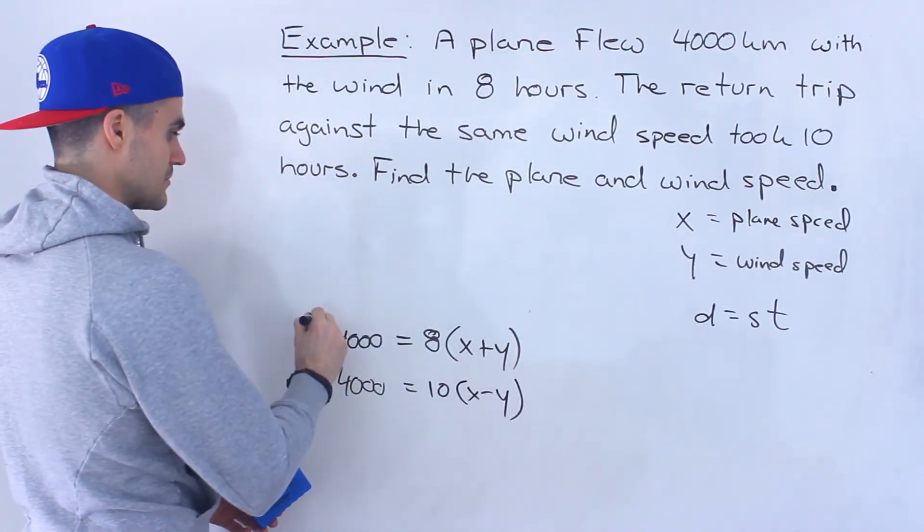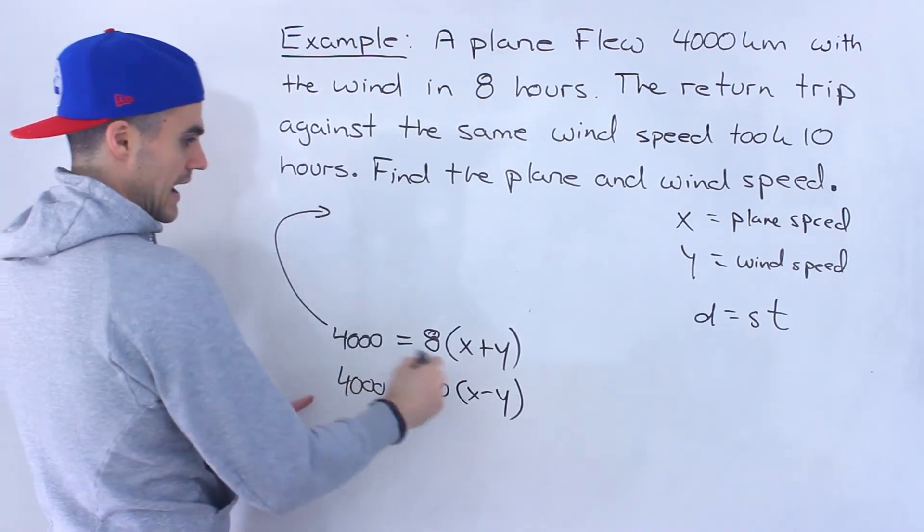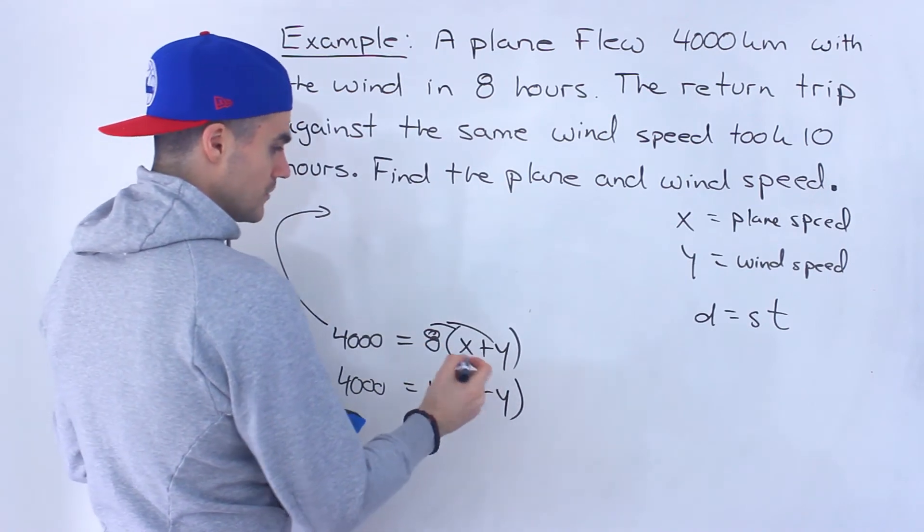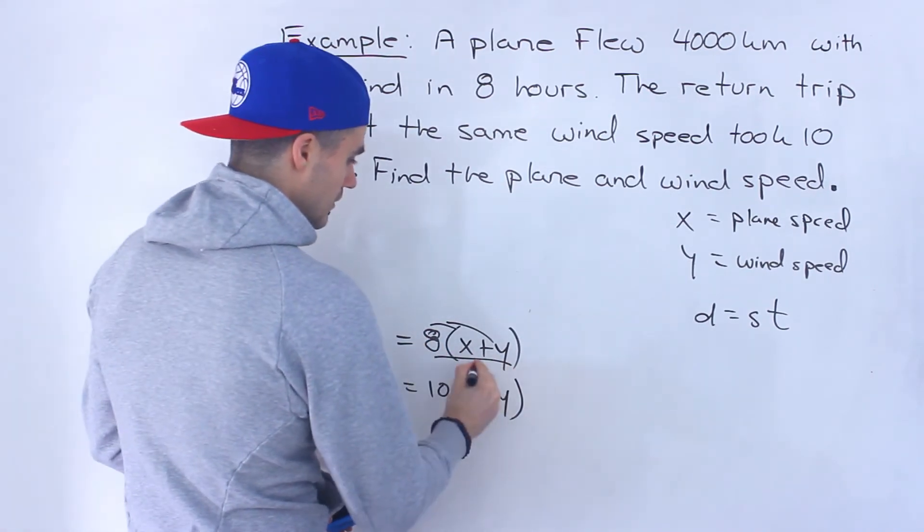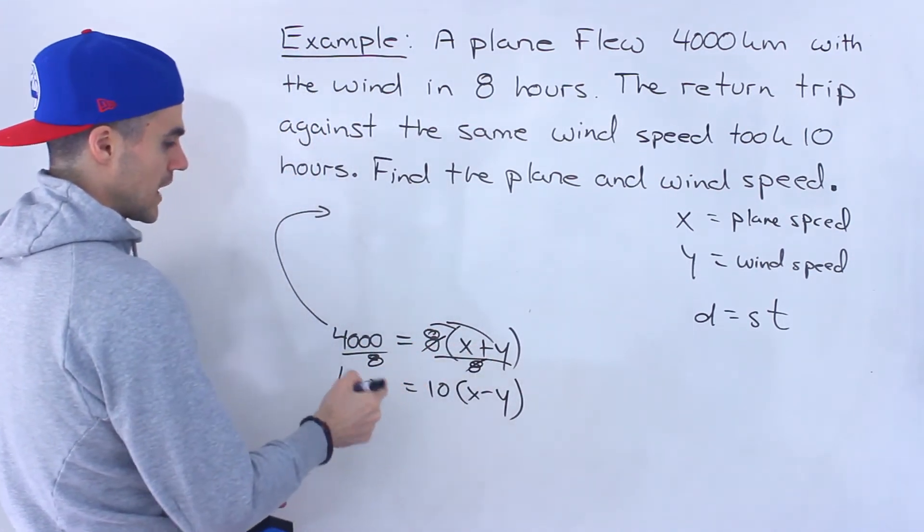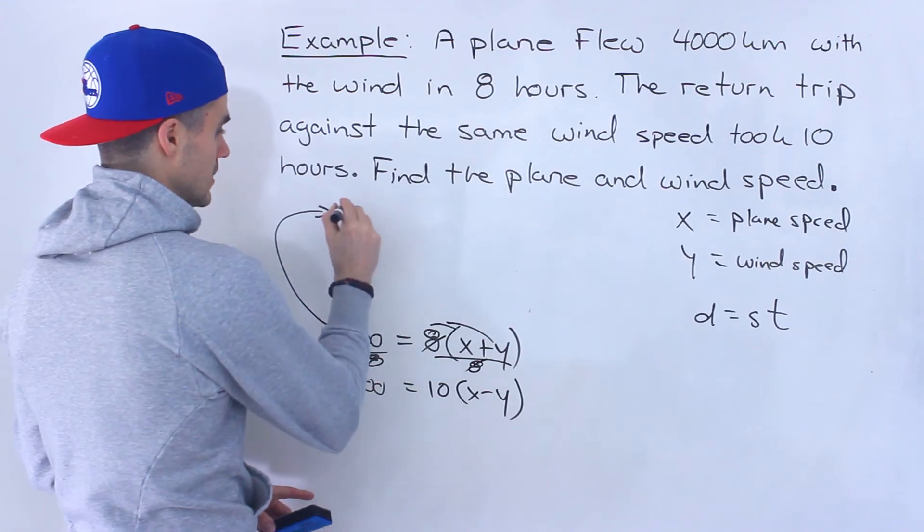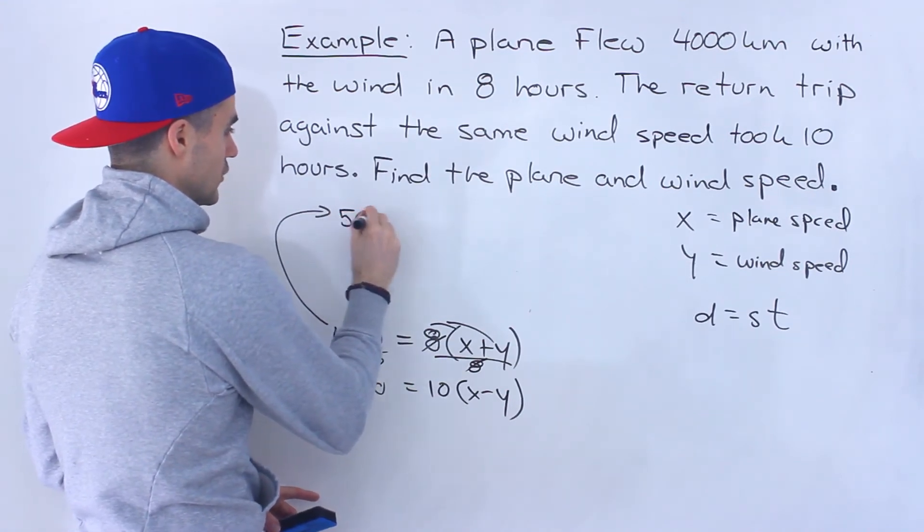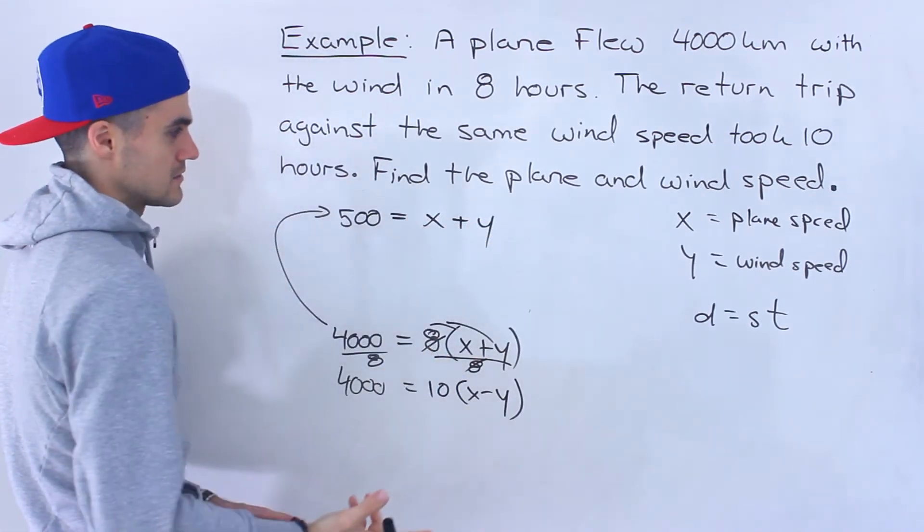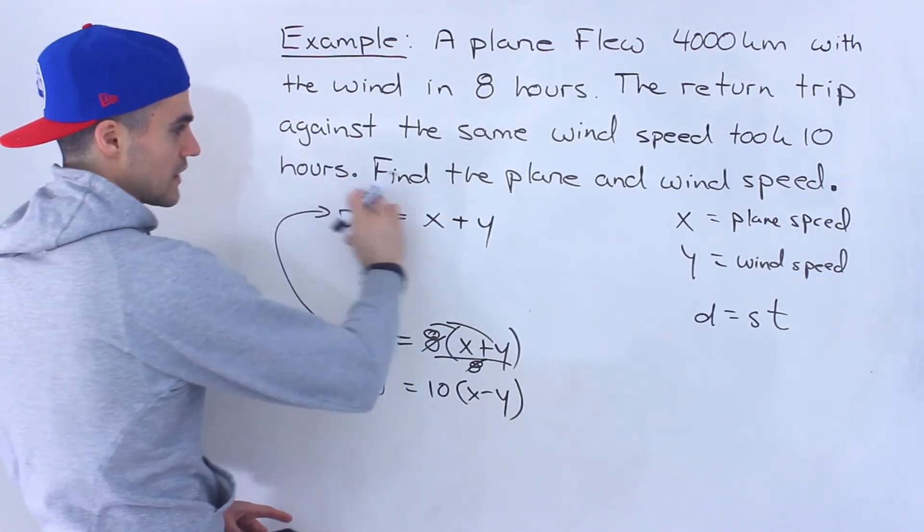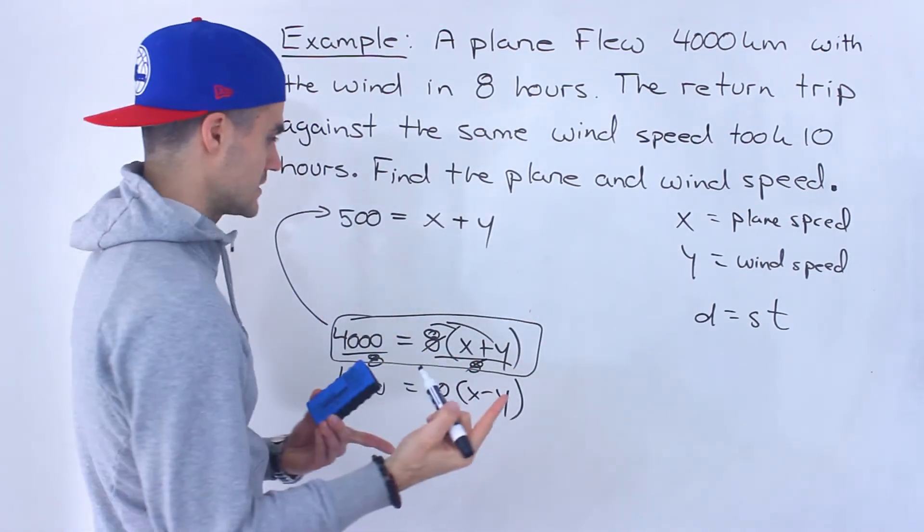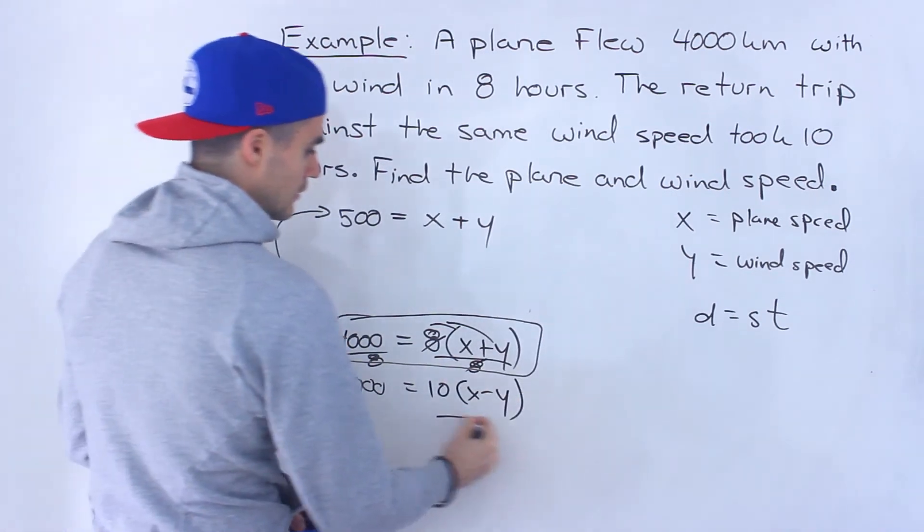Now before solving what I'm going to do is actually simplify these. You could distribute the 8 inside the bracket if you want but because the 8 is outside and it multiplies into 4,000 smoothly you could just divide both sides by 8 and then those 8s would cancel out. 4,000 divided by 8 would give us 500. So we'll have 500 equals X plus Y. I just feel like this equation is a lot more simple to deal with. They're the exact same equations. We just took this one and simplified it.